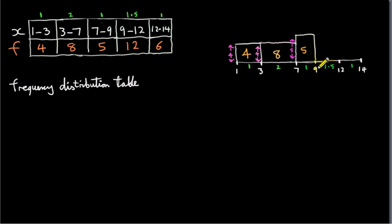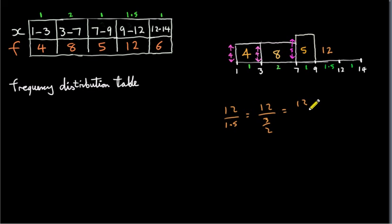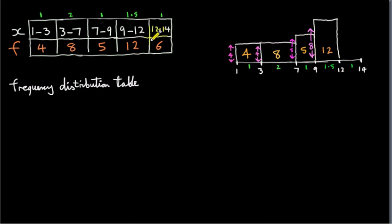For the interval 9 to 12, the base is 1.5. The area must equal the frequency, which is 12. So 1.5 times the height equals 12. We take 12 divided by 1.5, which is the same as 12 divided by 3 over 2, or 12 multiplied by 2 over 3, giving us 8. So this rectangle has a height of 8. Finally, the last interval has a width of 1 and a frequency of 6, so 6 divided by 1 gives a height of 6.